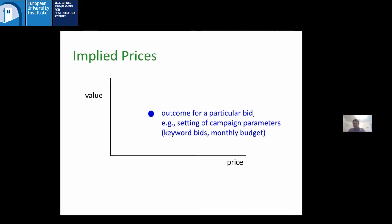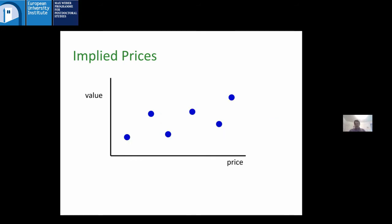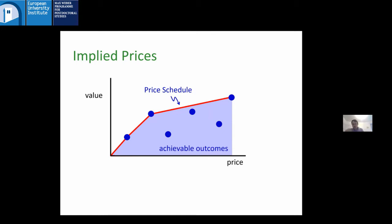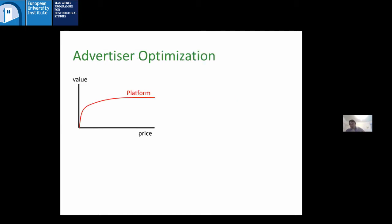From the advertiser's perspective, they set a bunch of campaign parameters and then get feedback: over a period of time, here's how much you paid and here's how much value you got in terms of clicks. As I adjust my campaign parameters — either manually, using platform tools, or a third-party optimizer — it maps out a space of possible outcomes, a Pareto frontier: here's how much I'd have to pay to get a certain amount of value. We can think of this frontier as basically defining a price schedule.